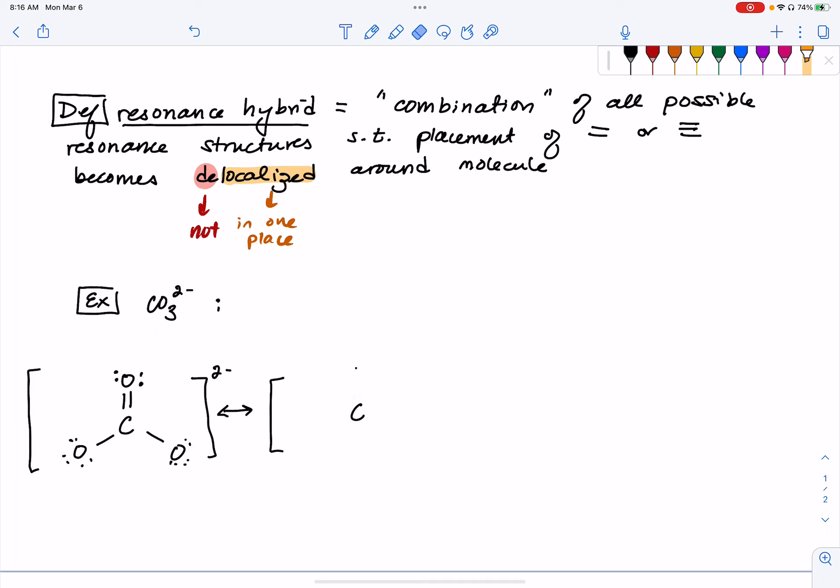And then we had the version where it was the carbon doubly bound to the oxygen on the bottom left. And then our last resonant structure was carbon doubly bound to the oxygen on the bottom right.